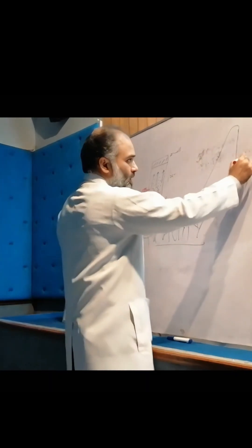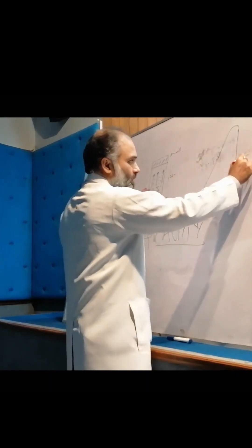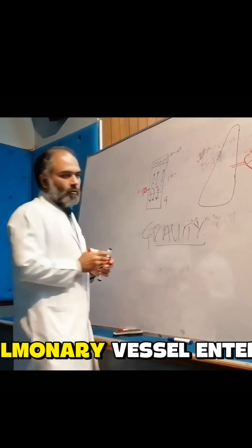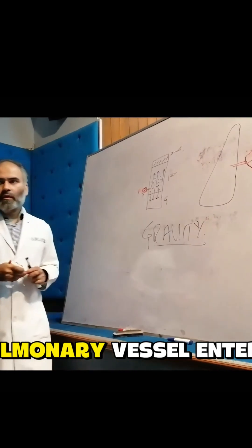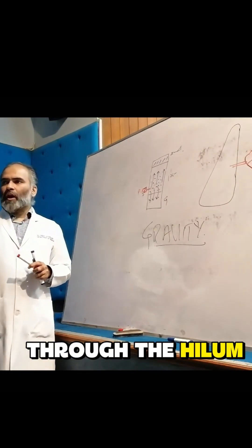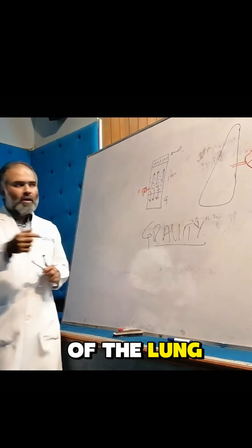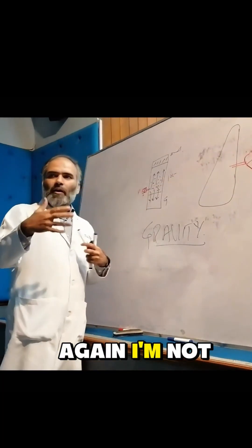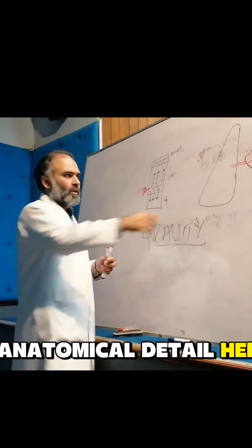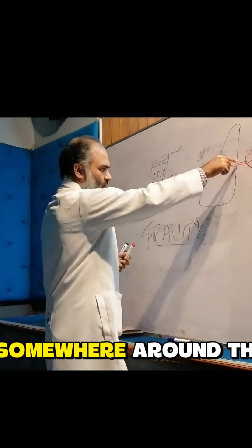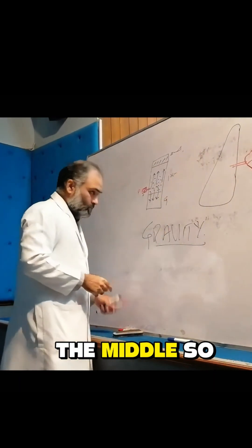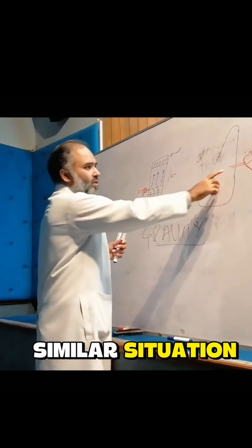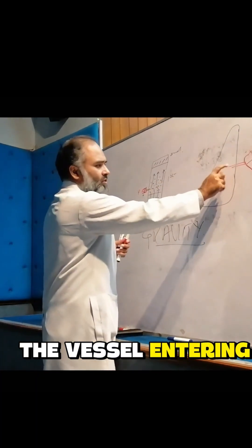The heart is somewhere around here. This is the pulmonary vessel entering through the hilum of the lung. The hilum is somewhere around in this area — the middle — so you can imagine it's a very similar situation, with the vessel entering here.